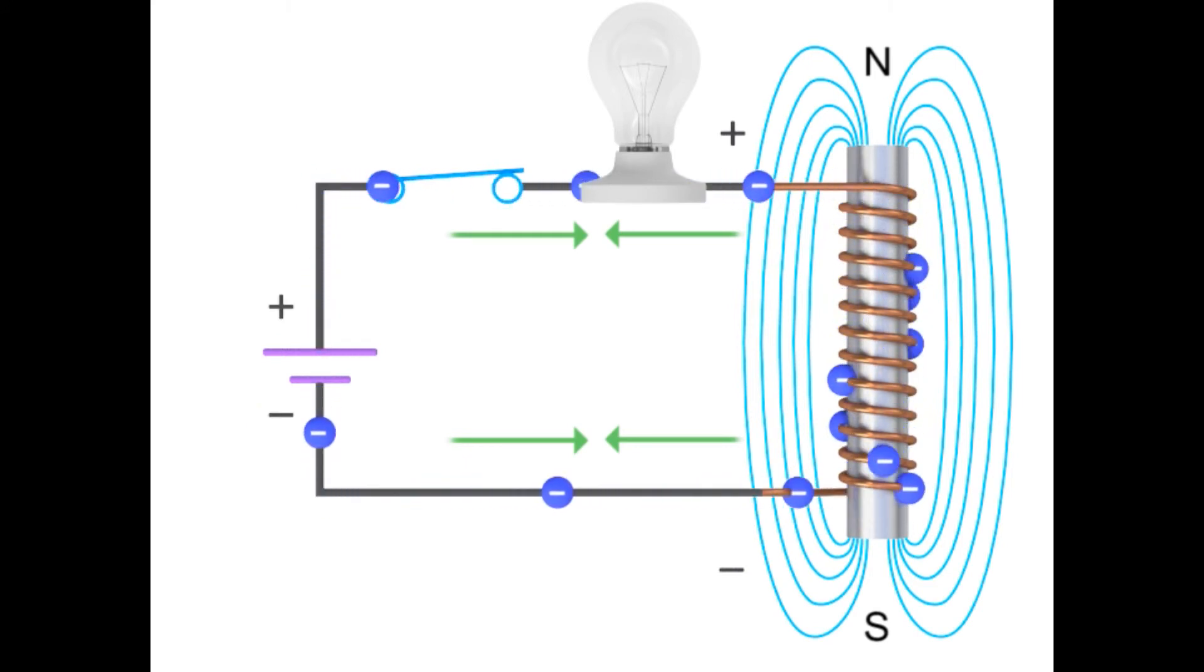Therefore, the bulb will not turn on instantaneously. However, once the electromagnetic field stops expanding based on the level of changing current, the flux will no longer generate an opposing voltage in the circuit.